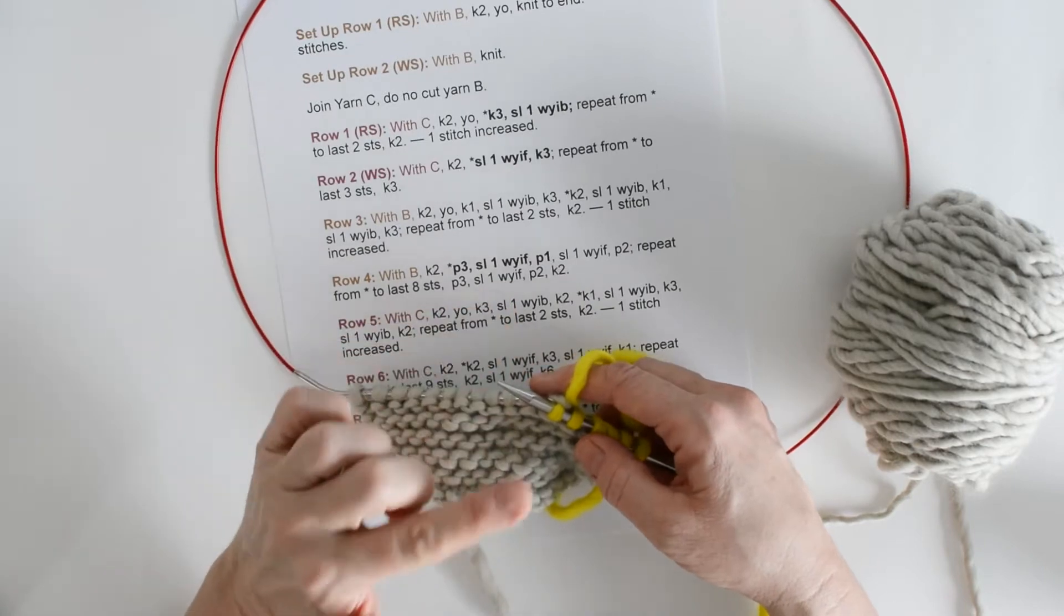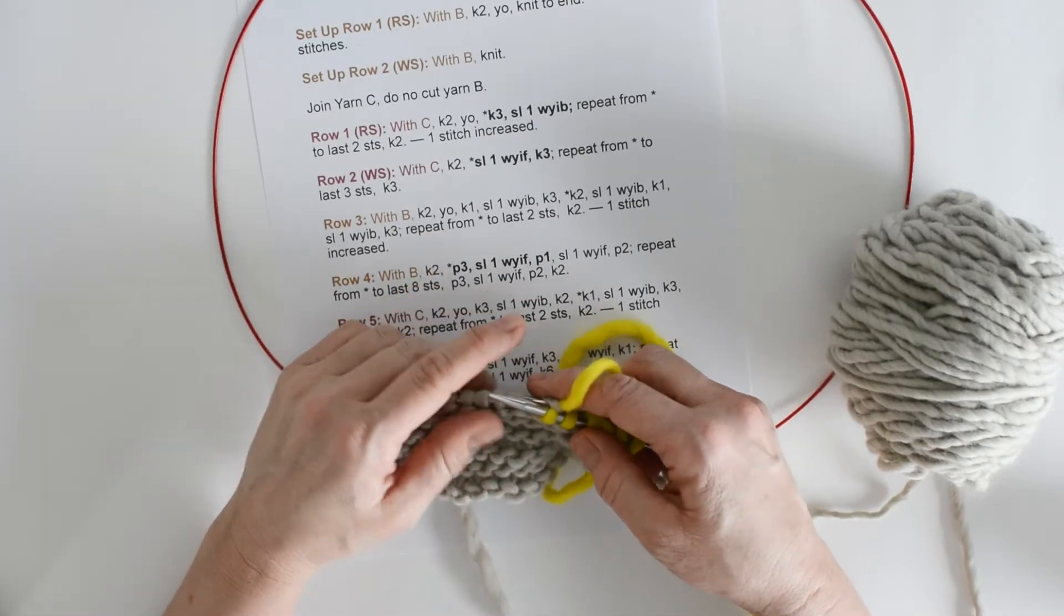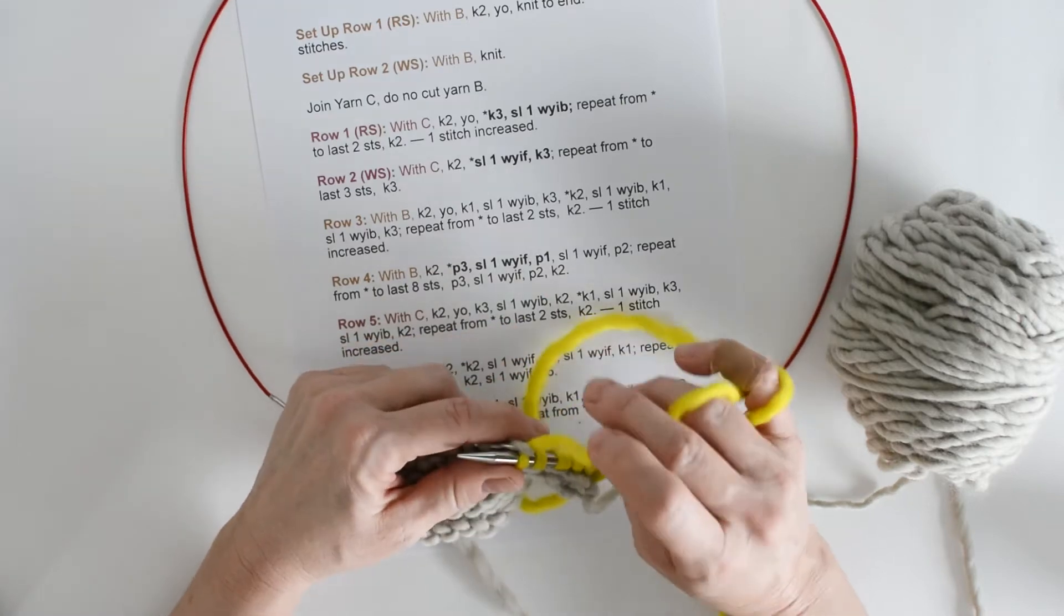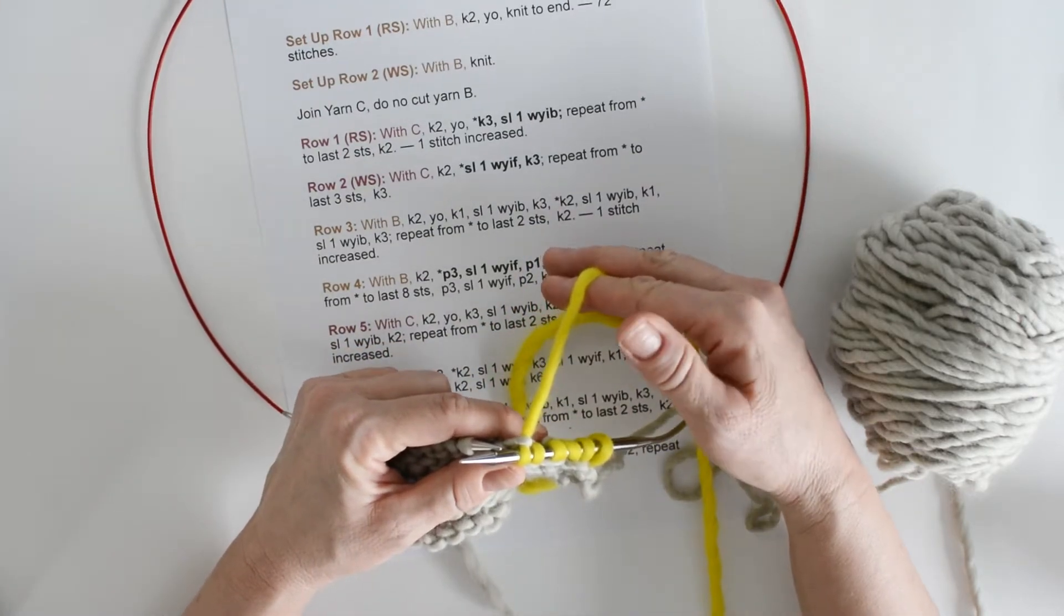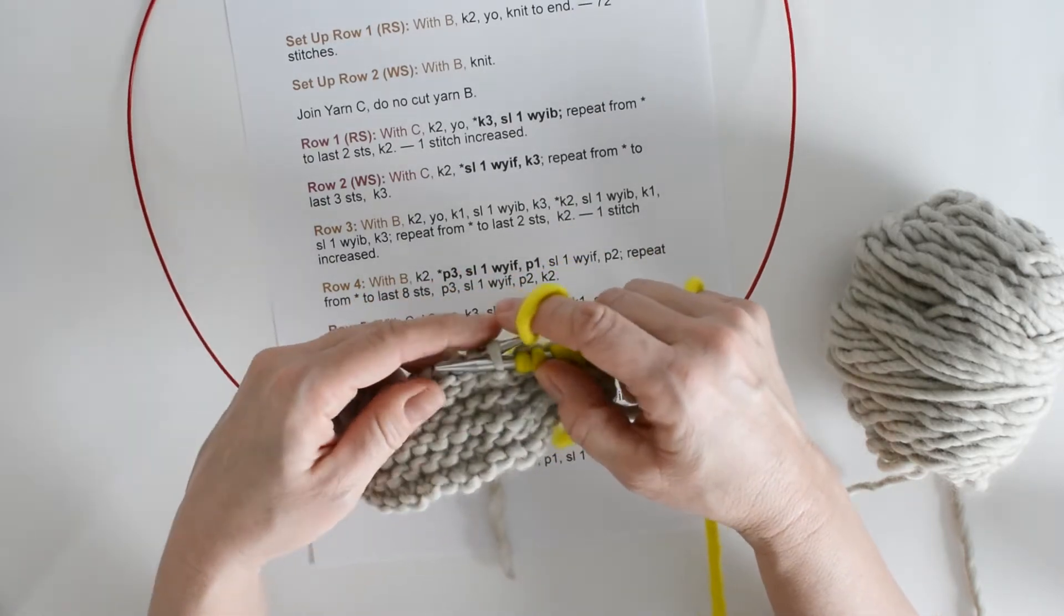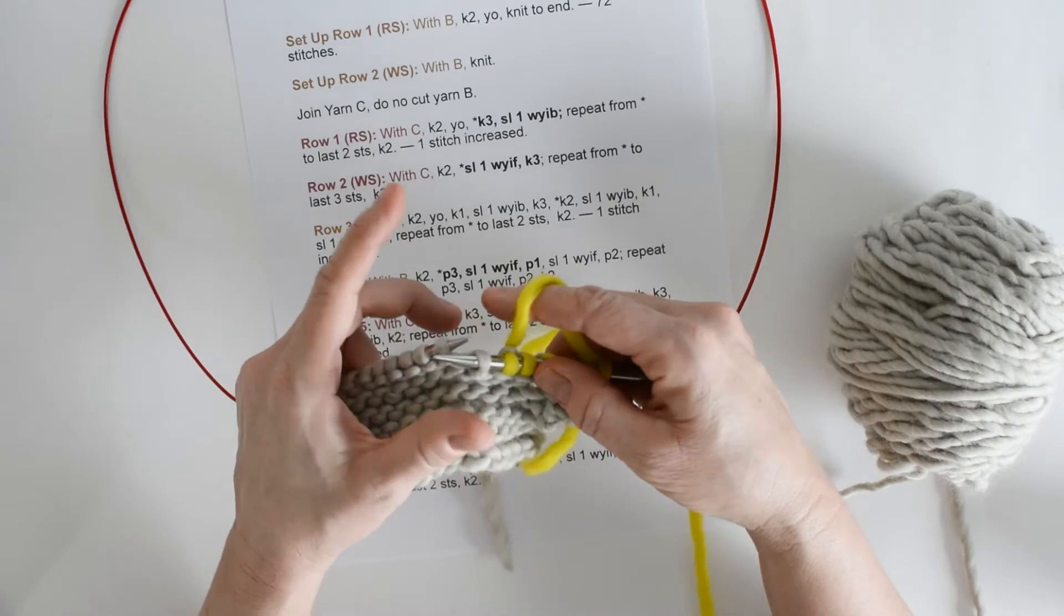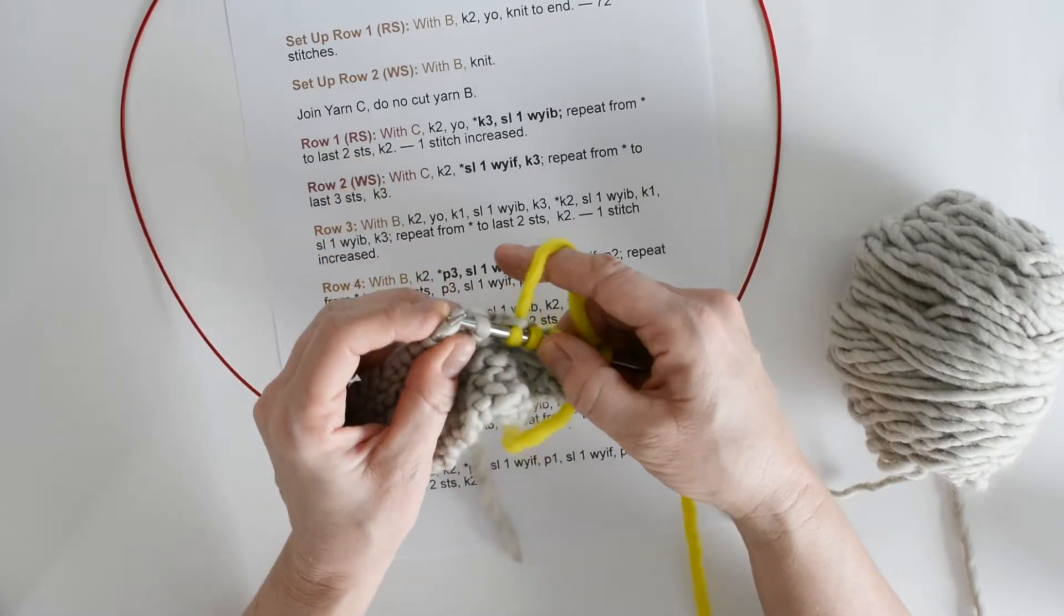Okay, it's time to slip 1 with yarn in back. So remember, all of our slips are purlwise. Our yarn is in back, which means it's on the side that's facing away from us. I'm going to slip 1, don't have to do anything else to it. Now I can begin knitting again. Knit the next stitch.